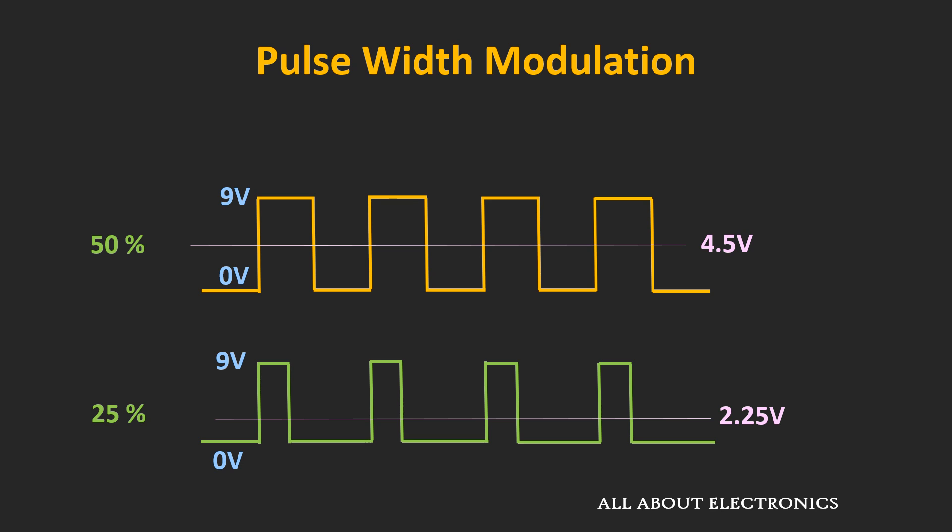By controlling the pulse width of this output waveform, we are actually controlling the voltage applied to the LED circuit, and in this way we are controlling the brightness of the LED. This same technique is also used for controlling the speed of DC motors. When we talk about pulse width modulation, two factors are always associated with it: the switching frequency and the duty cycle.